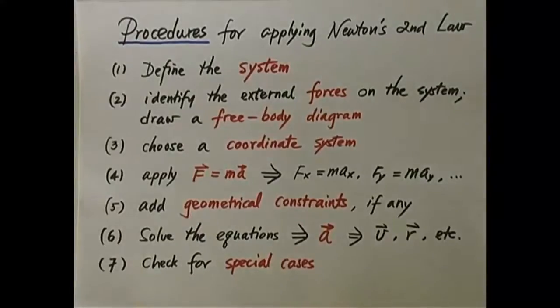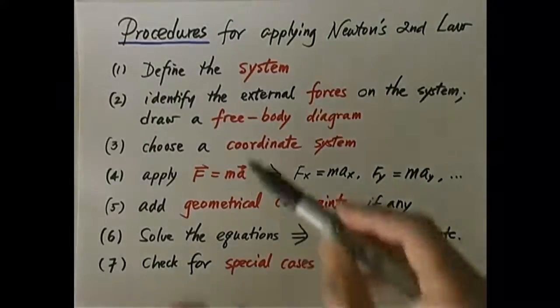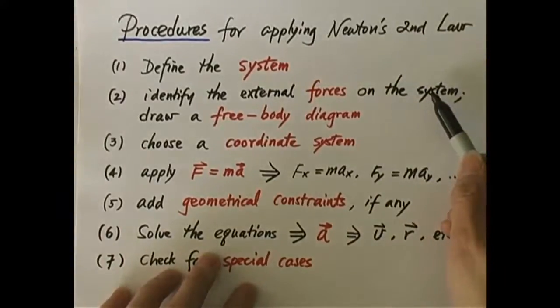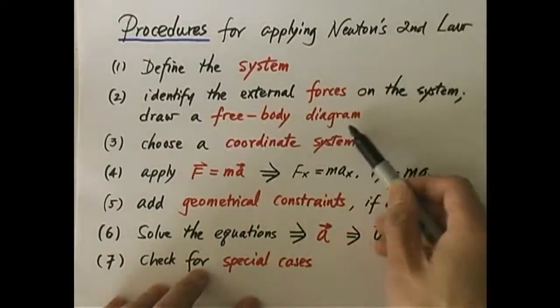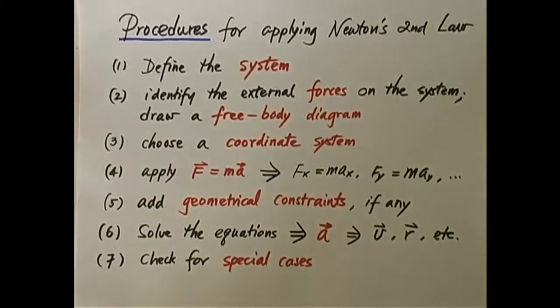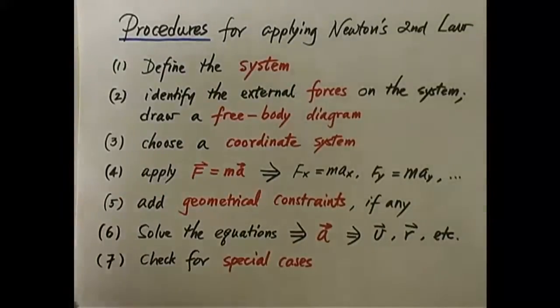Once you identify the system, then you can figure out the forces exerted on this system. Remember, only external forces matter, so we're going to use external forces on the system. And once you identify these forces, please draw what's called a free body diagram. What does free mean here? Free means it's isolated. Imagine it's isolated from the rest. You only take into consideration that object, and that's called a free body diagram.